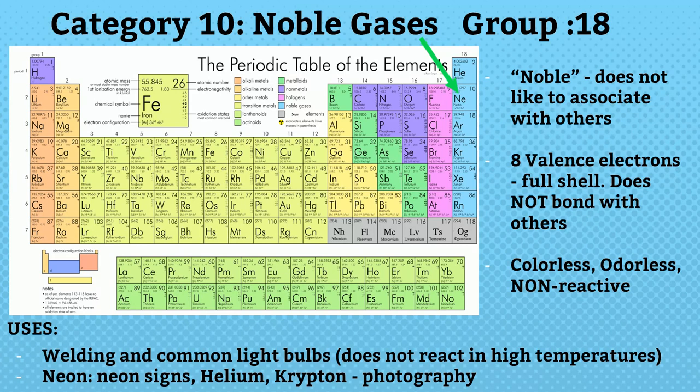In this way, the long form of periodic table has 18 groups and 7 periods. The last elements, 113 to 118, are newly discovered and their properties are not clearly known till today. Thank you.